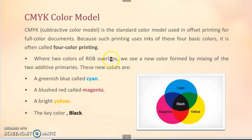Where two colors of RGB overlap, we can see that a new color is formed. As in this image, you can see that where two colors of RGB are being overlapped, a new color is being formed. The new colors produced are cyan, blush red called magenta, bright yellow, and a key color that is black.